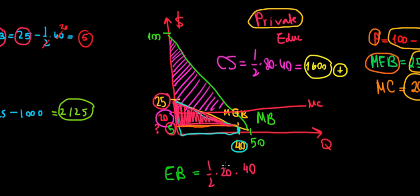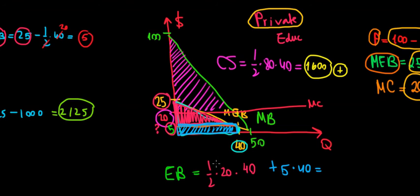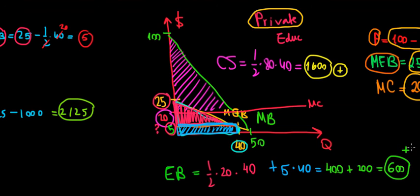We also add the area of the rectangle underneath, which makes up the entire total external benefits. The rectangle area is five times 40. So total external benefits equals one-half times 20 times 40, which is 800 divided by two — that's 400 — plus five times 40, which is 200. So 400 plus 200 equals 600. That's also a gain.